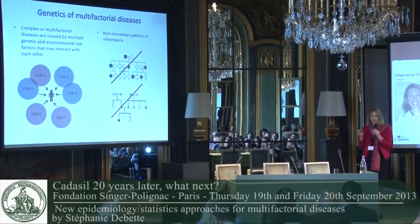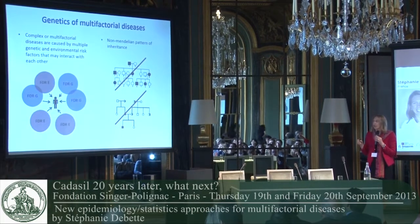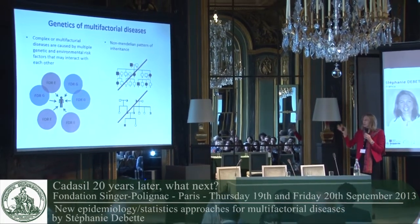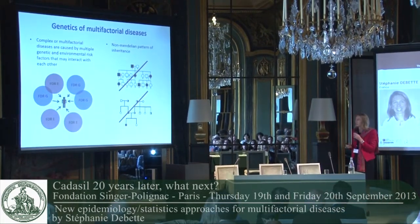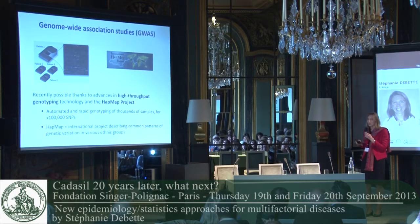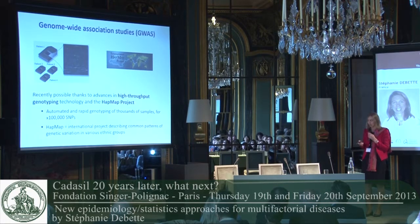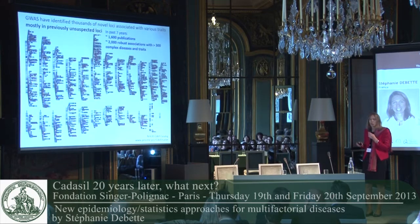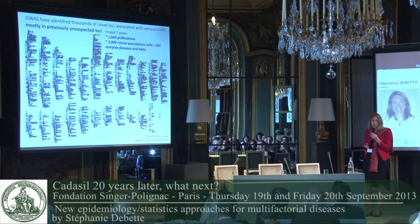Complex diseases are due to multiple genetic and environmental risk factors that each have small effects individually, but that combined lead to the occurrence of the disease, and they may also interact with each other. As we have seen yesterday, genome-wide association studies have been a major breakthrough in the identification of genetic risk factors of complex diseases.